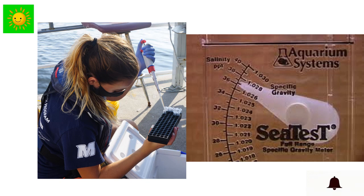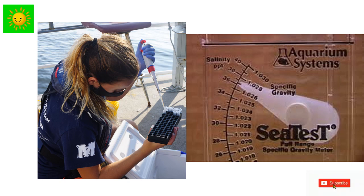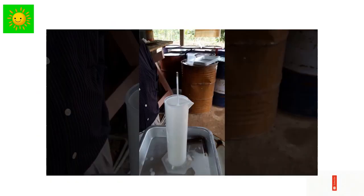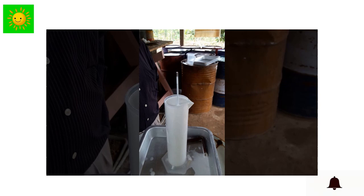Sea water contains a high amount of dissolved salt. A special hydrometer called a sea water hydrometer is used to measure the density of sea water, which is higher than normal fresh water due to its high salt concentration. The composition of rubber is also measured by a special hydrometer known as a metrolab. This is what we have to learn in the 11th lesson on density. Thank you.